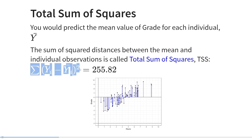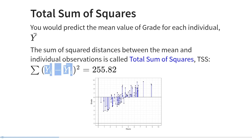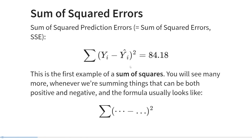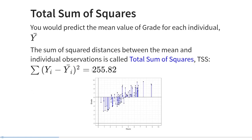The total sum of squares formula again looks like a sum of squares: we calculate the squared distances between individual observations y sub i and the mean y-bar. In this particular data set, the total sum of squares has the value 255.82, which is bigger than the regression sum of squares of 84.18. In general, the total sum of squares is the largest possible sum of squares we can get for this data set, and the sum of squared errors will always be smaller than that.